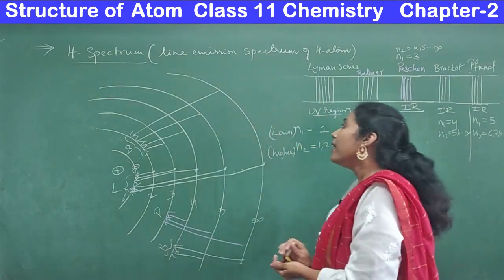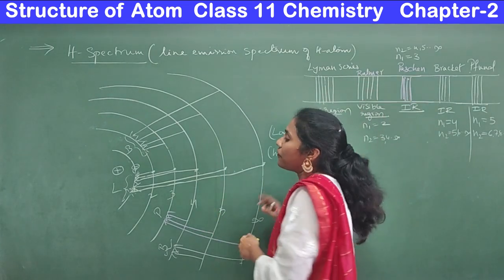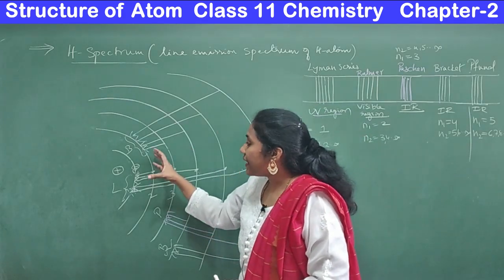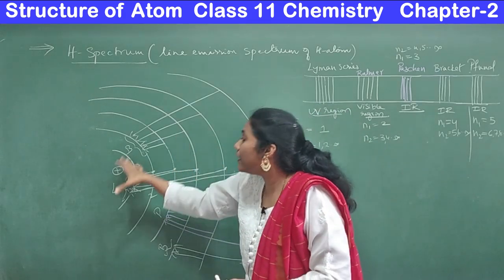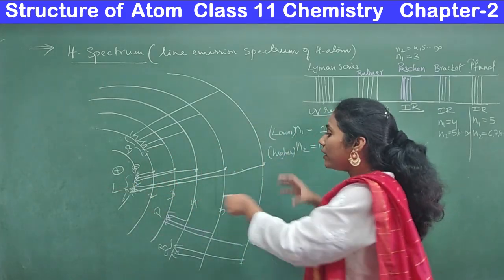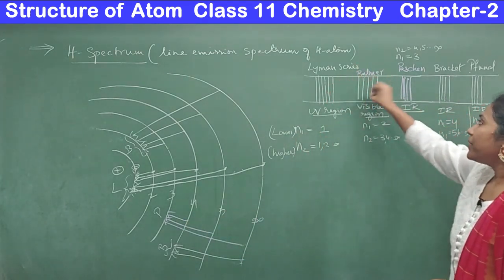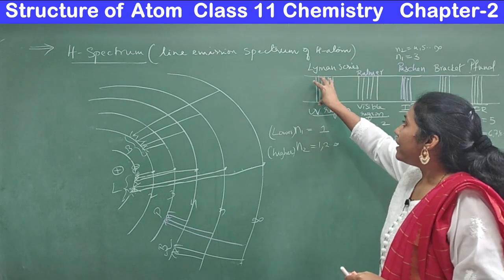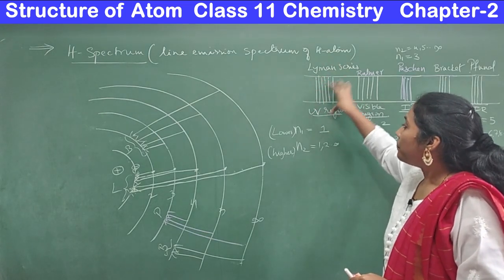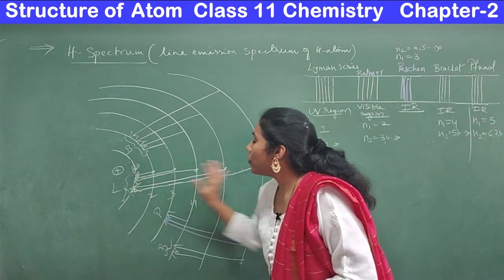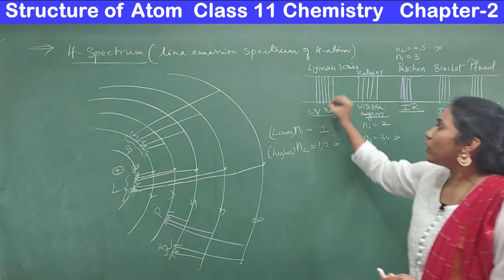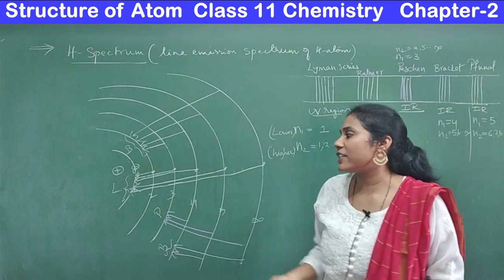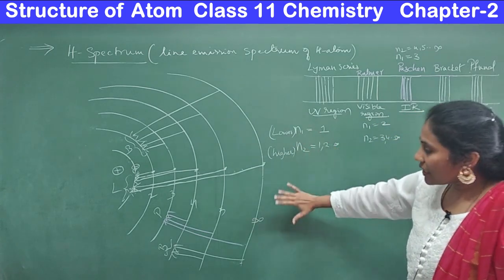So like this, you get different series of lines in the line emission spectrum of hydrogen. Why we got different series of lines is because the electron doesn't always go directly to the first shell — it may initially go to the second and then from second to first, or it may go to the third shell first and then from third to first. Depending on the different transitions, we get different lines in the hydrogen spectrum. The lines corresponding to transitions ending at n=1 belong to the UV region and are called the Lyman series.